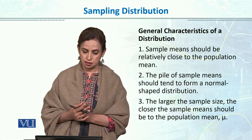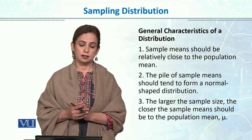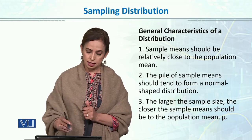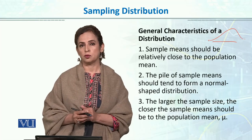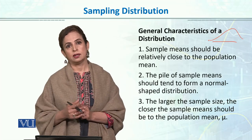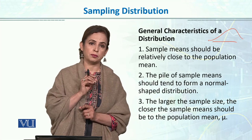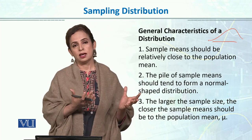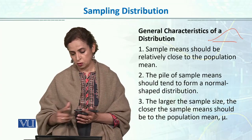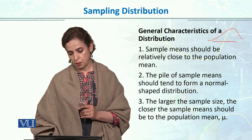What are the general characteristics of a sampling distribution? First, sample means should be relatively close to the population mean. Second, the pile of sample means should tend to form a normal shape — as we have seen, as n size increases the shape becomes closer to normal. Third, the larger the sample size, the closer the sample means should be to the population mean (the population parameter). When we include more individuals in our sample, we can better approximate the population parameter. So, the greater the sample size, the better the estimation of the population parameter.